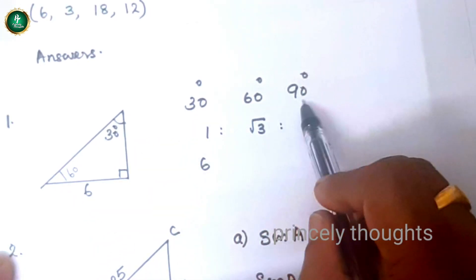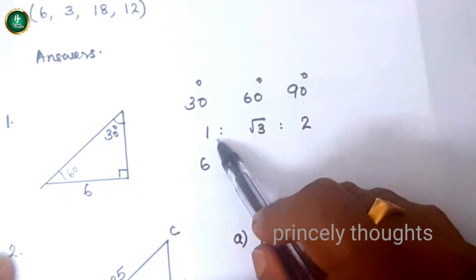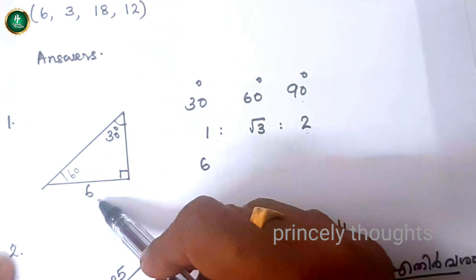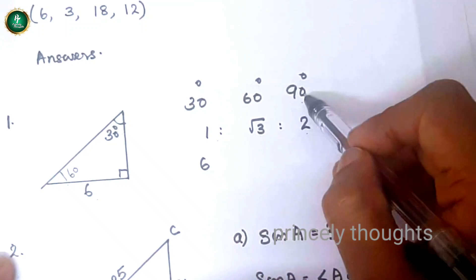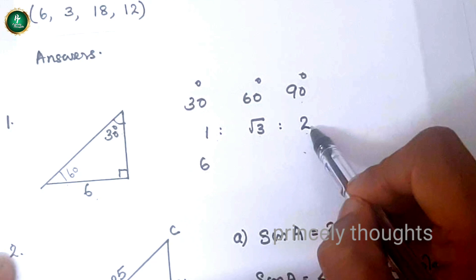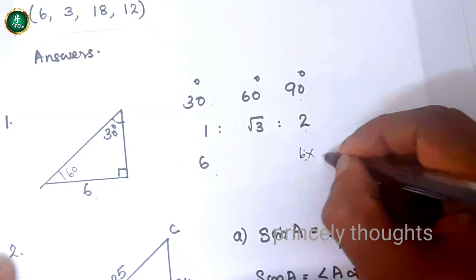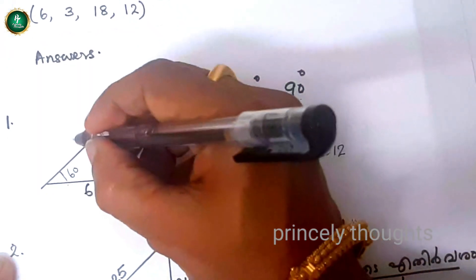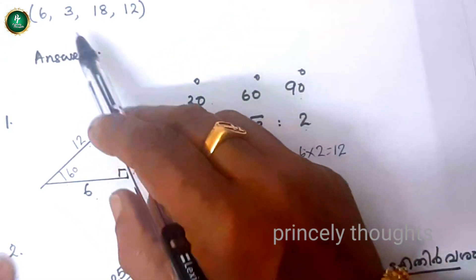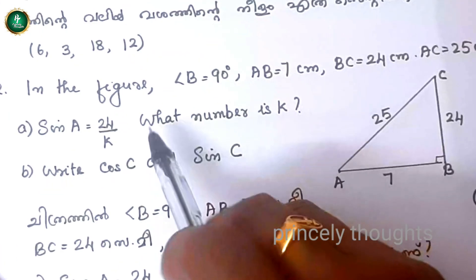In a 30-60-90 triangle, the sides are in the ratio 1 : √3 : 2. The opposite side to 30° is 6 cm. So opposite side is 6, and the ratio gives us: 1 is to 2 and √3 is to 2. Therefore the largest side (hypotenuse) is 12.